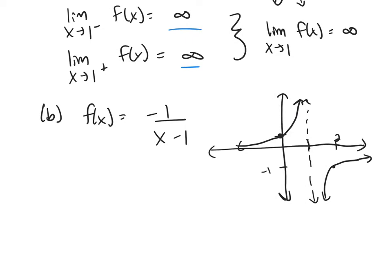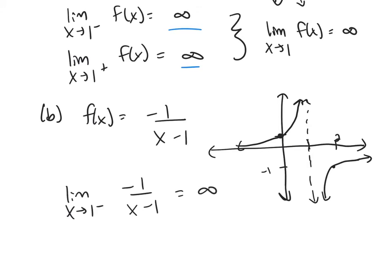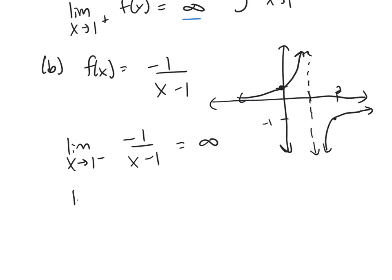So now tell me based on this graph, you should be able to find my two one-sided limits. Approach 1 from the left, what's the limit going to be? It'll be infinity. Approach 1 from the right, it's going to be negative infinity.